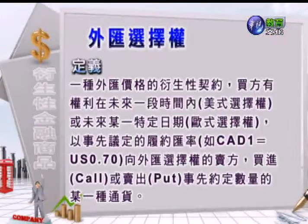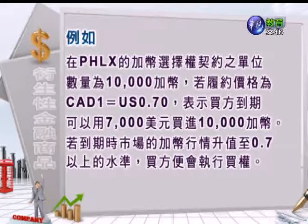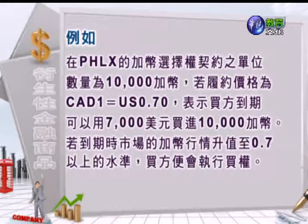接着我们来看外汇选择权的定义：它是一种外汇价格衍生性商品，买方有权利在未来一段时间内或未来的某一个特定日期，以事先议定的履约汇率（比如像加币一块钱对美元0.7），跟外汇选择权的卖方买或卖约定数量的通货。比如说在Philadelphia的加币选择权契约，单位契约数量是1万加币，所以假如履约价格是加币一块钱对美金0.7，就表示在到期的时候，它可以用7000块美元买进1万加币。假如到期时市场的加币行情上升到0.7以上，我们说外汇选择权是价内的，买方便会执行买权；反之加币假如贬值到0.7美元以下，这个外汇选择权是价外的，买方就会放弃这个买权。